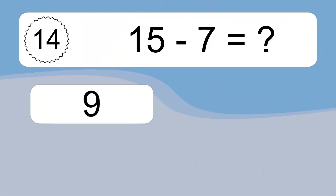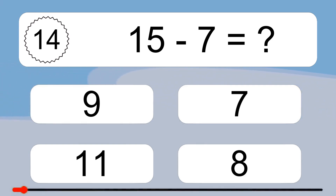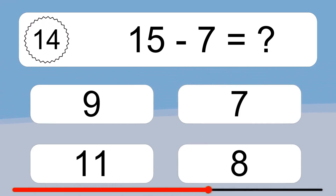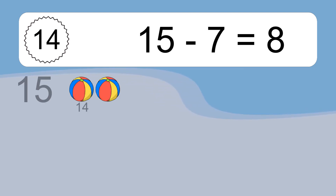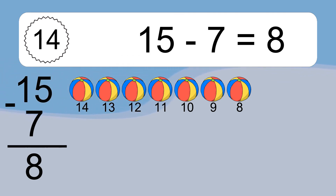15 minus 7 equals 8. Let's count it: 14, 13, 12, 11, 10, 9, 8.